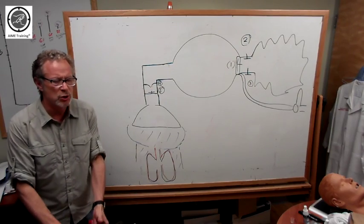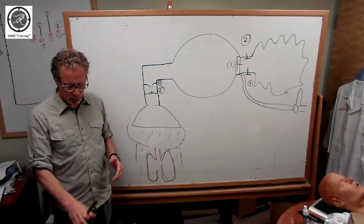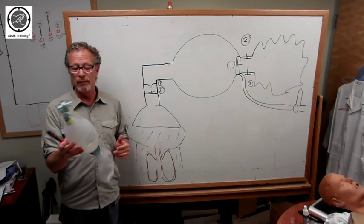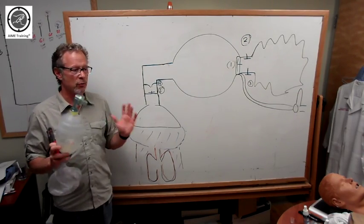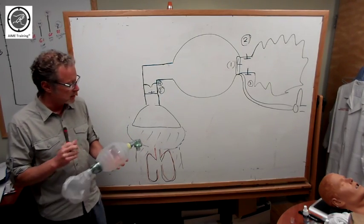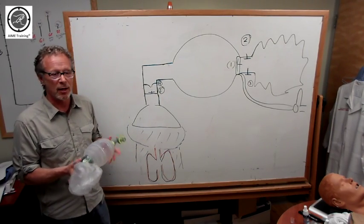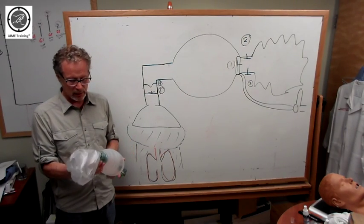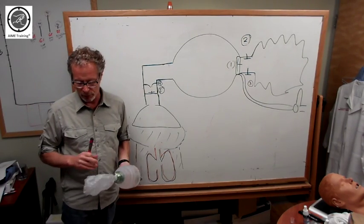When we start our AIM program at the beginning of each day, what we do is we take one of these BVMs, we take it apart, and we throw it on the floor for people to put it back together. The reason why we do this is we think this is an important device to understand how it works, how to assemble it, and how to problem solve through it.